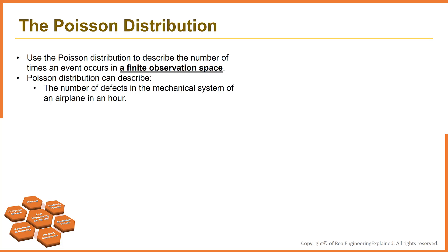The Poisson distribution can describe the number of defects in the mechanical system of an airplane in an hour, or the number of calls to the call center in an hour, or the number of people visit our YouTube channel per hour.